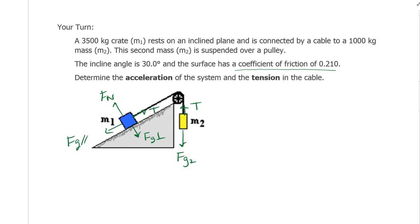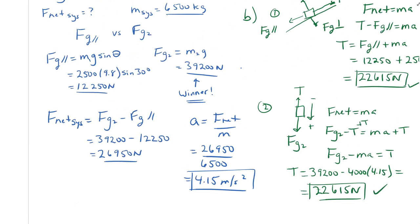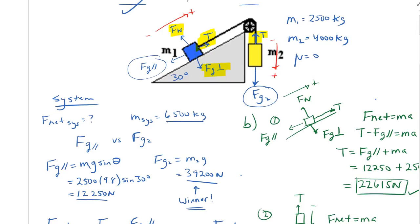The question is which direction do we put the friction force? Friction force is mu times the normal force, but first we need to figure out the direction. We need the same first question as before: which way is it going to accelerate? Is Fg parallel larger, or is Fg2 larger? We do the contest: Fg parallel versus Fg2.